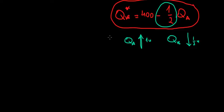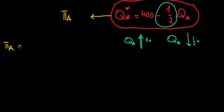Recall that in the previous video we found the reaction function of the follower, player B, in the market. Now with this in mind we can calculate the profit of the leader. We'll use this to compute the profit of player A, the leader in the market. For that we need the profit function of the leader, which is the difference between total revenues and total cost of player A.